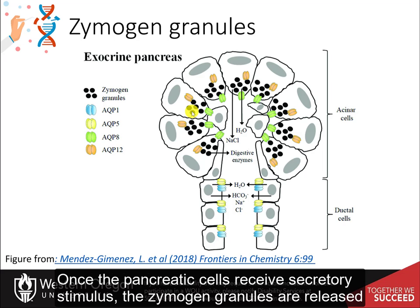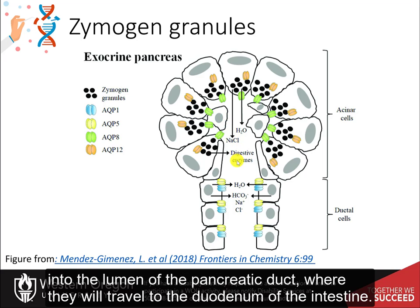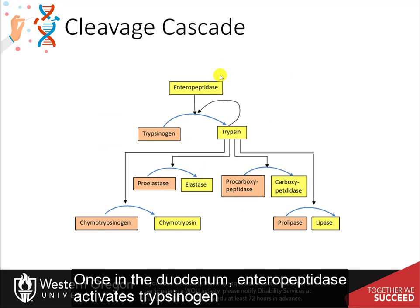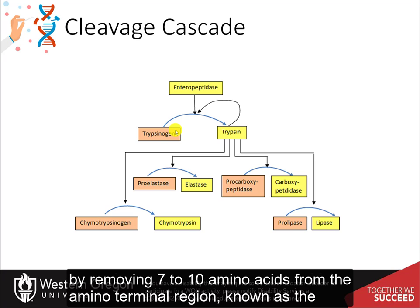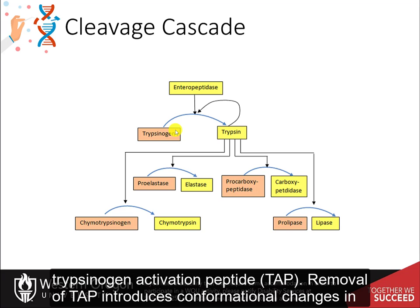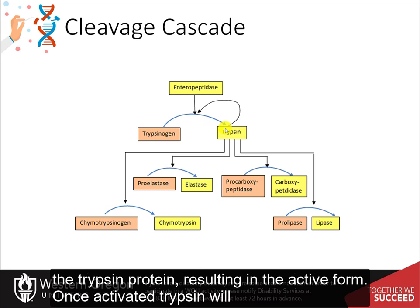Once the pancreatic cells receive a secretory stimulus, the zymogen granules are released into the lumen of the pancreatic duct, where they travel to the duodenum of the intestine. Once in the duodenum, enteropeptidase activates trypsinogen by removing 7–10 amino acids from the amino terminal region, known as the trypsinogen activation peptide (TAP). Removal of TAP introduces conformational changes in the trypsin protein, resulting in the active form.